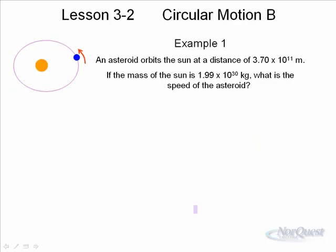Example number one: an asteroid orbits the sun at a distance of 3.70 × 10¹¹ meters. The mass of the sun is 1.99 × 10³⁰ kg. What's the speed of the asteroid? Well, what's holding the asteroid in orbit? The centripetal force is caused by gravity, therefore the centripetal force is equal to gravity. You have to decide which centripetal force equation to use. I've got mv²/R, or I've got 4π²Rm/T². Since we're asking for the speed, you should use the formula that has speed in it, and that's the only one.